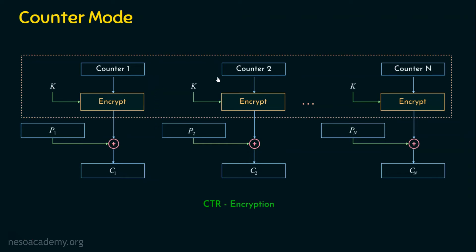We are not doing chaining here — these are independent blocks. The biggest advantage of independent blocks is that we can have parallelism. If we have multiple cores in our computer, multiple cores can perform multiple block encryptions and decryptions at the same time. Counter 2 is used for encrypting plaintext 2, which is XORed with the encryption of counter 2 using the same key, producing ciphertext block 2.